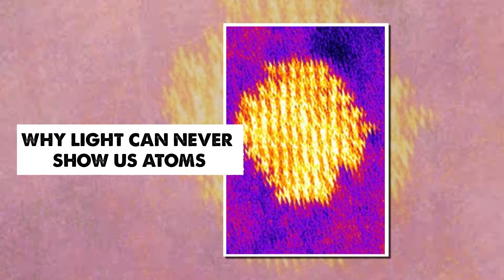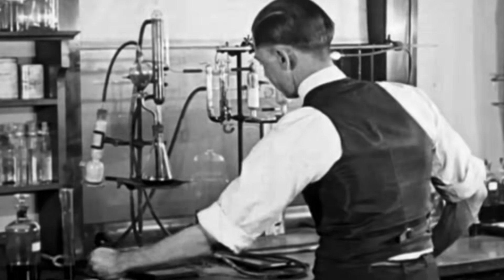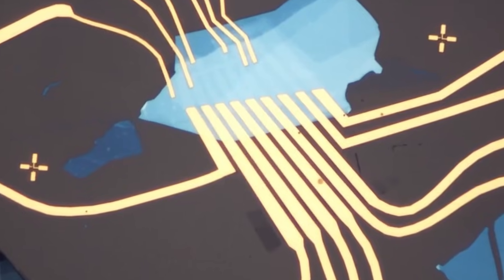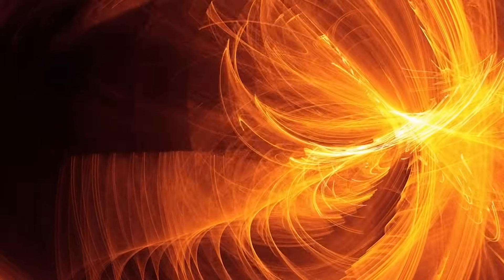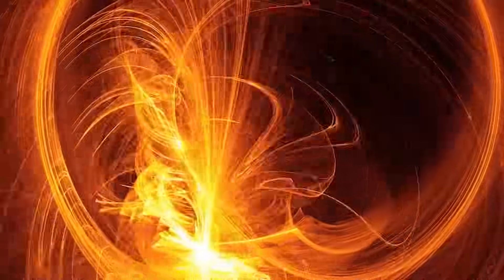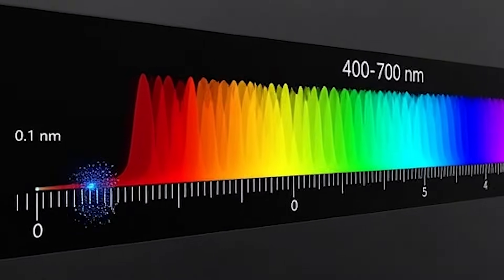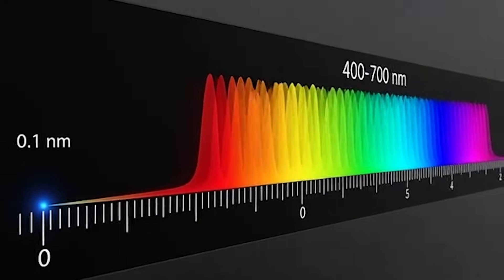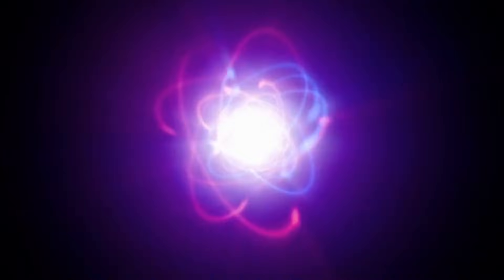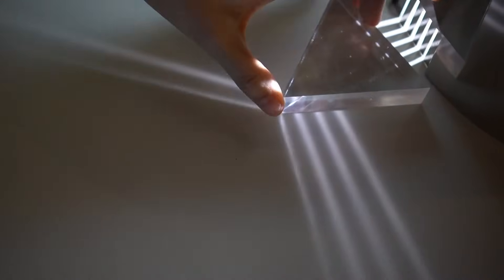Why Light Can Never Show Us Atoms. To understand why seeing atoms was once unthinkable, you must first understand light's limits. Light waves are what let us see the world, but they are far too large to show something as tiny as an atom. Even the shortest wavelengths of visible light are thousands of times wider than the diameter of an atom itself. When a wave is much bigger than what you want to observe, it does not reflect clearly. It bends around the object and hides it instead of revealing it.